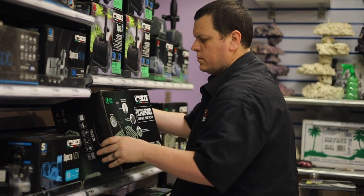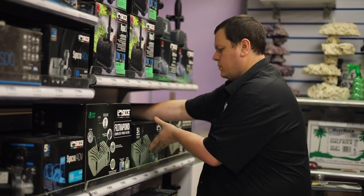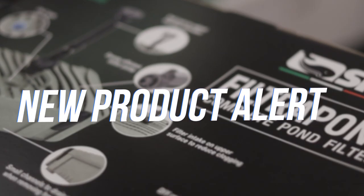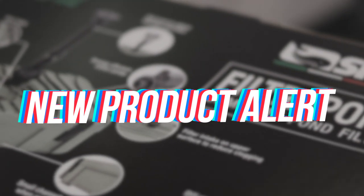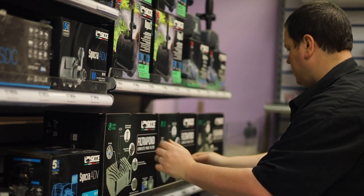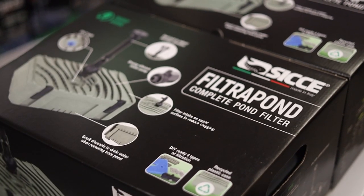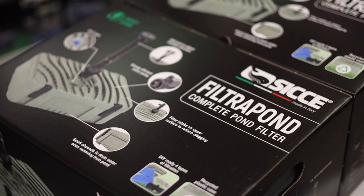Hi everyone, today we're going to be taking a close look at the brand new complete pond filter unit from Siche. With three models available, you're going to be able to cover everything from that small little pool all the way up to a 10,000 liter fully filtered pond.